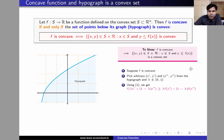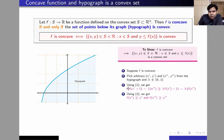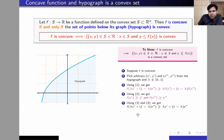Since (x′, y′) and (x″, y″) belong to the hypograph, that means f(x′) ≥ y′ and f(x″) ≥ y″. Now, we combine these and replace f(x′) by the smaller number y′ and f(x″) by the smaller number y″ to get: f(λx′ + (1−λ)x″) ≥ λy′ + (1−λ)y″.